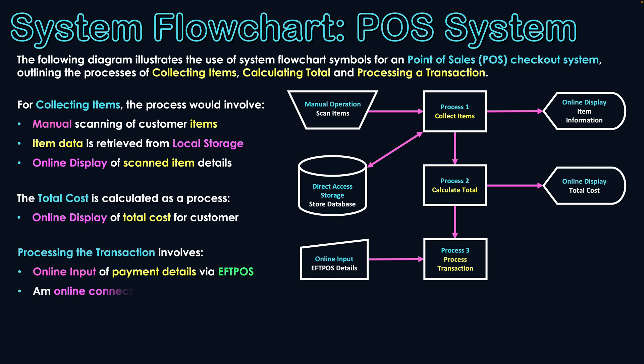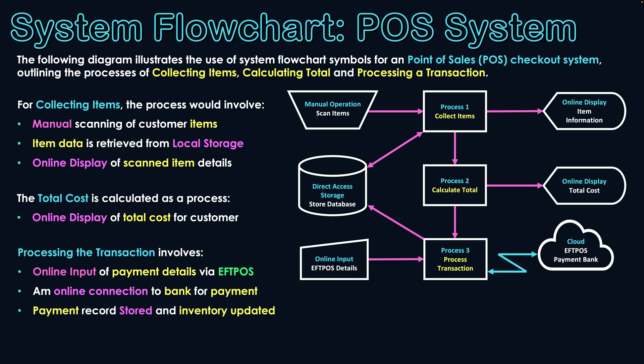The system then connects with the customer's bank to get approval for the transaction. A telecommunications link is made to the bank — online banking is being used because we're using EFTPOS — and that confirms the payment and transfers funds. Once complete, the payment record is stored in the database and the inventory is updated, because all the products that were purchased need to decrease by one.